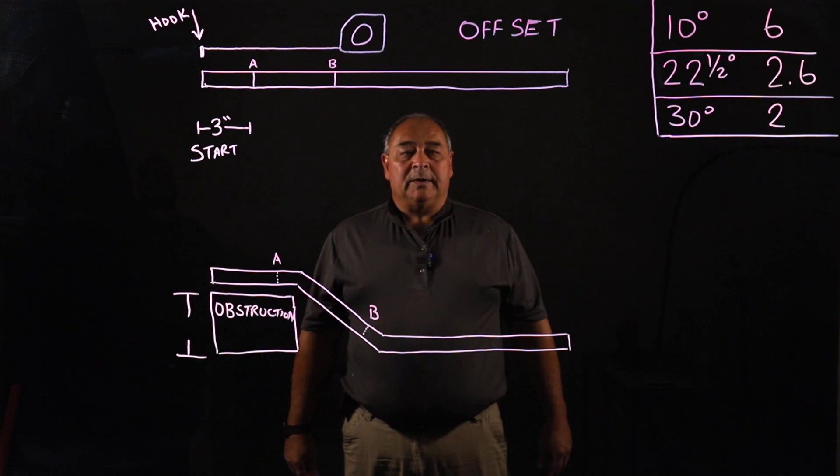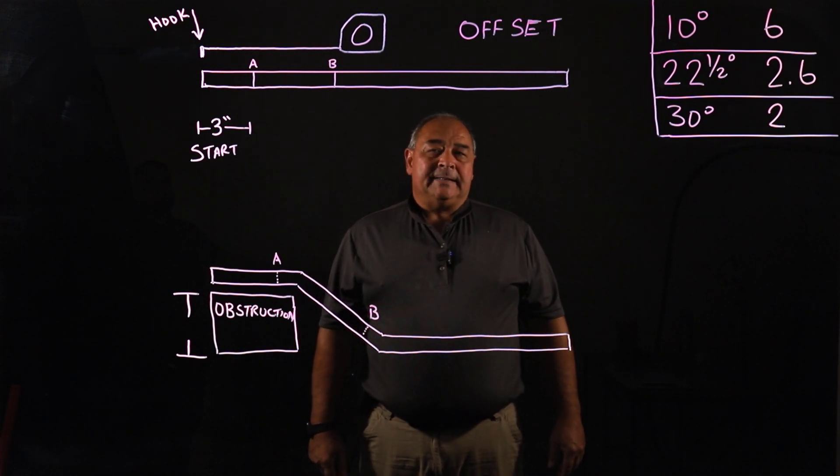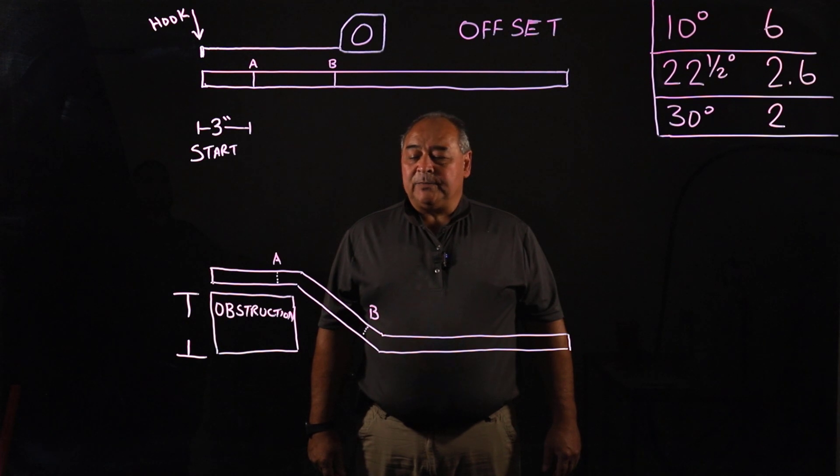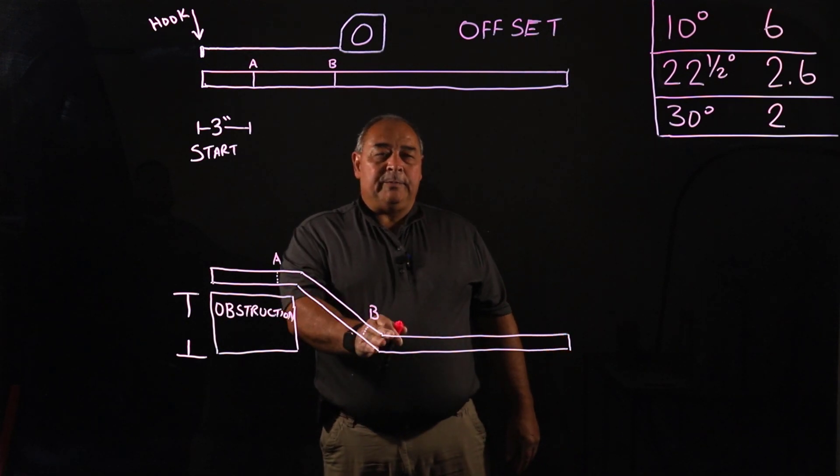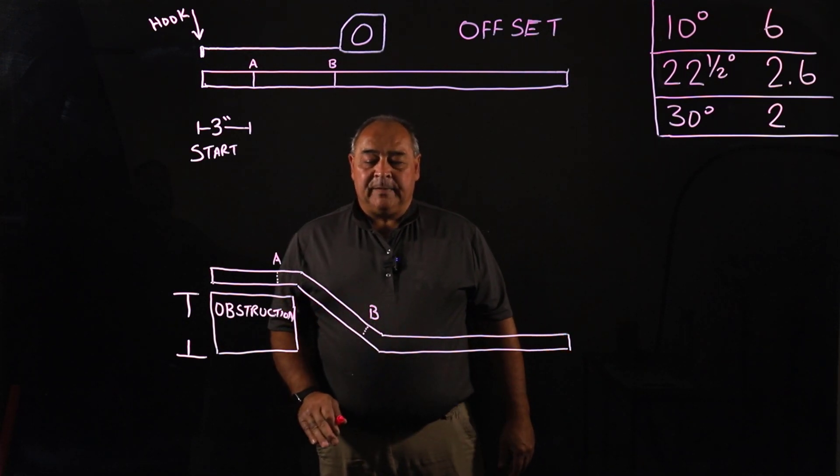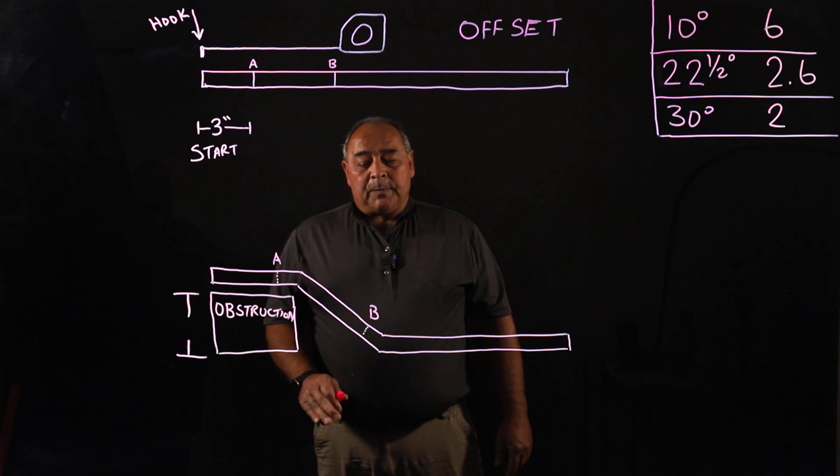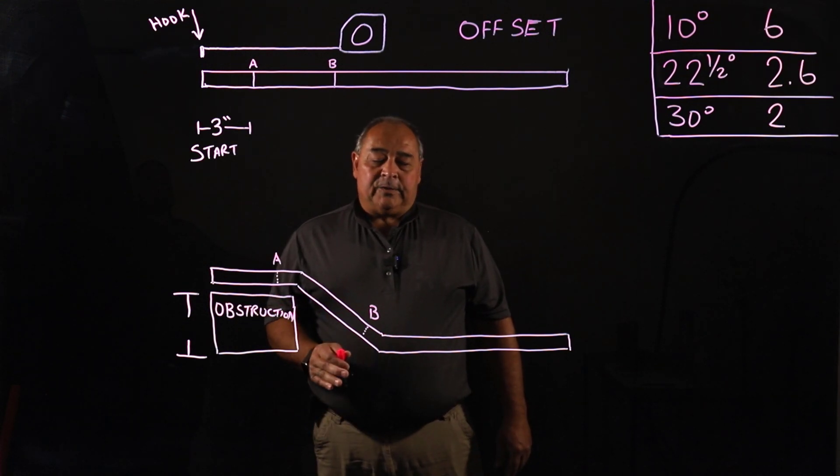We have suggestions and our goal, once we get to the three inch obstruction and beyond, we want to stay around a 30 degree bend. The reason why is two 30 degree bends equals 60 degrees. Two 45 degree bends equals 90 degrees.